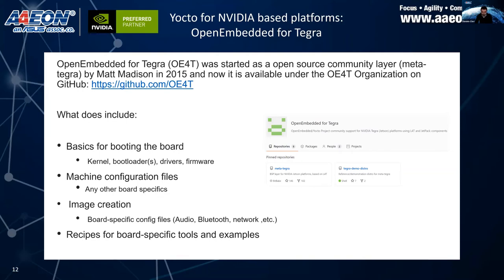The base of Yocto support for NVIDIA platforms is Open Embedded for Tegra — an open source community layer project. It was initially developed by Matt Madison in 2015 and has since moved under the Open Embedded for Tegra organization on GitHub. It includes various components necessary to build a system running on an NVIDIA platform: kernel, bootloaders, drivers, firmware, board-specific files, configuration files for audio, Bluetooth, and networking, as well as recipes for board-specific features, tools, and examples.